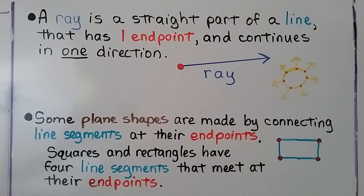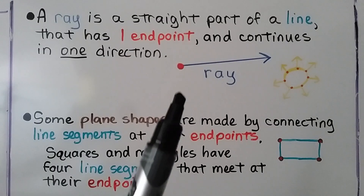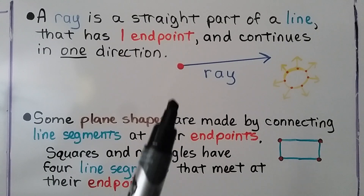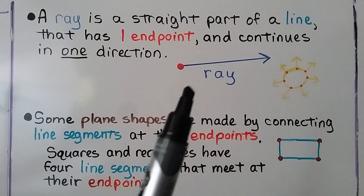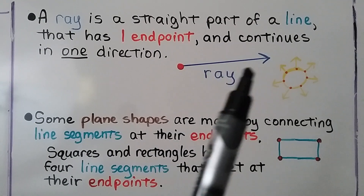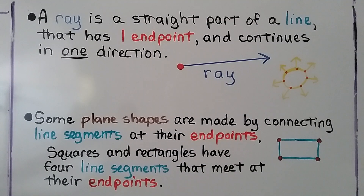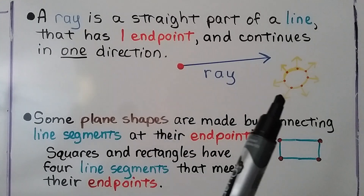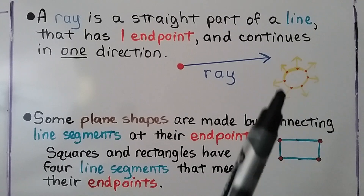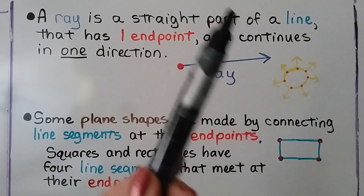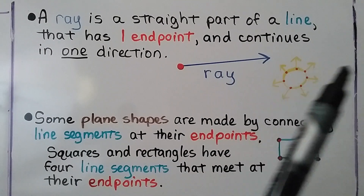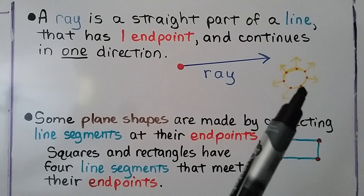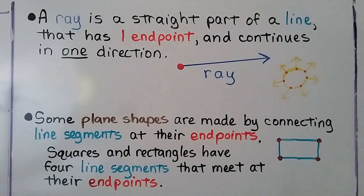A ray is a straight part of a line — it's part of a line, like a line segment is part of a line. It has one endpoint and it continues in one direction. That's why it has an arrow on one side. We can think of it like the rays of a sun that go continuing in one direction. It starts at the point and then goes outward in one direction.